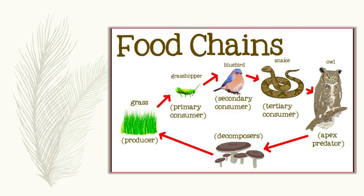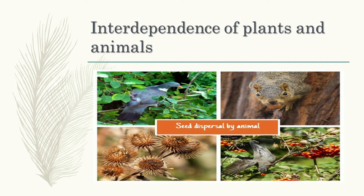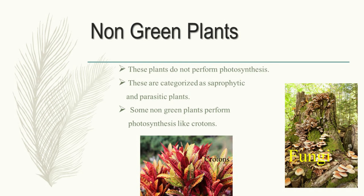This interdependence is very beneficial in maintaining the number of animals in nature. Otherwise, any particular type of animal or plant will increase in number. For example, if there are no carnivores, the number of herbivores will increase, and indirectly it affects the number of plants and creates an imbalance in nature. It is not only animals that depend on plants — plants also depend on animals for the dispersal of their seeds. Animals like mice and squirrels help in seed dispersal.